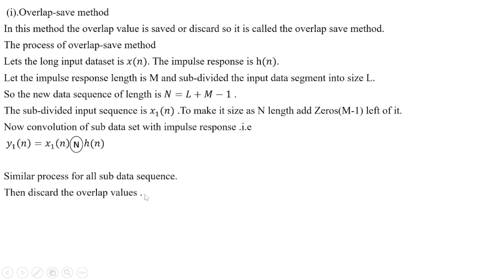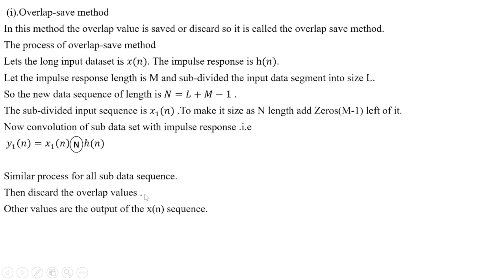Then, discard the overlap values. As you can see, this produces the section convolution output.